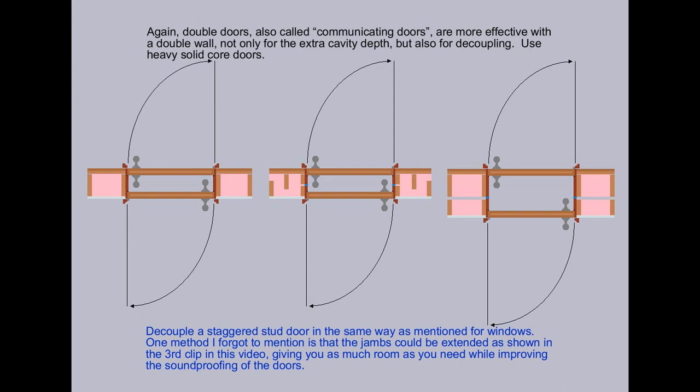Again, double doors, also called communicating doors, are more effective with a double wall, not only for the extra cavity depth, but also for decoupling. Use heavy solid core doors.